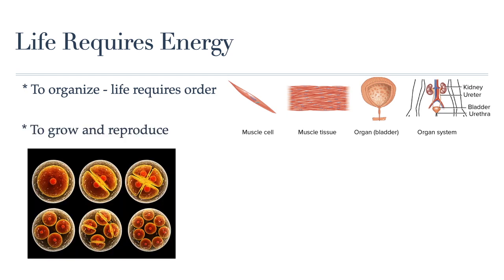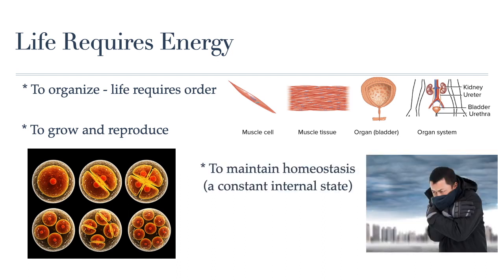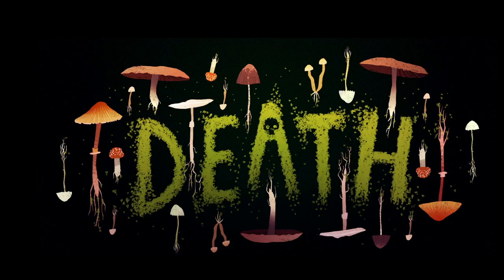Organisms need to grow and reproduce, and both of those things require a lot of energy. And all living things need to be able to maintain a constant internal state, something called homeostasis, which we will explore in more detail in a later unit. But what happens when energy is no longer available or is no longer able to be used by a cell? The answer is death — it's what happens when a cell is no longer able to use energy.